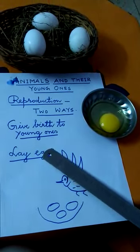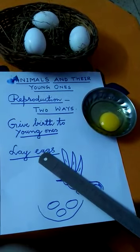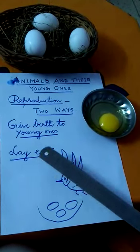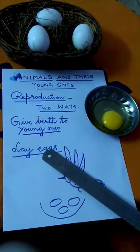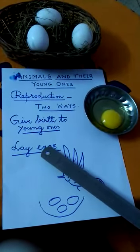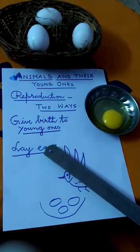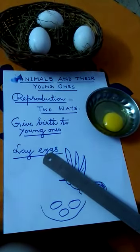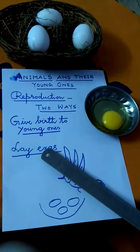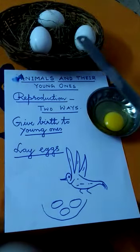Animals such as birds, fish, frog, tortoise, crocodiles, and snakes lay eggs. Their young ones hatch out of the eggs.